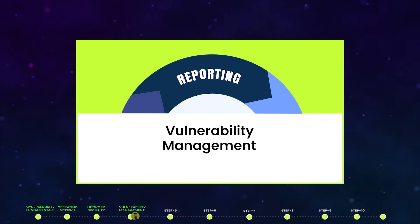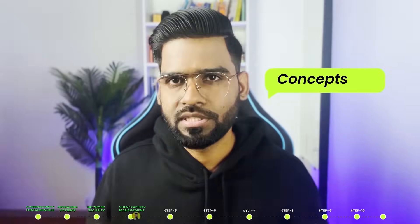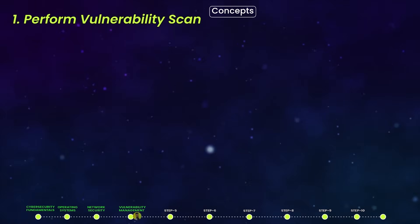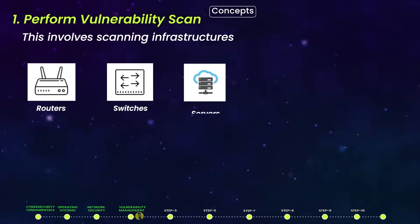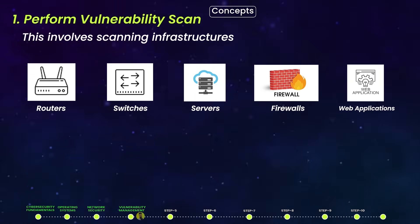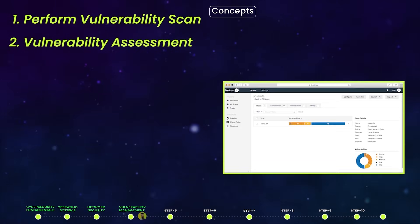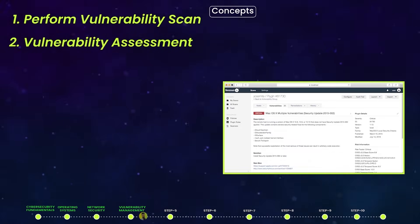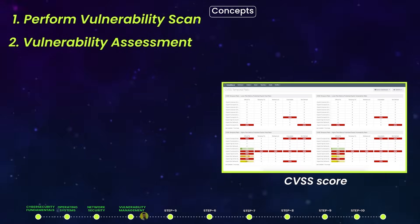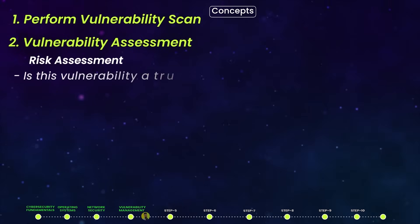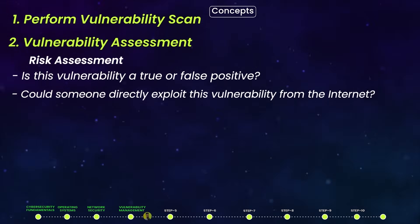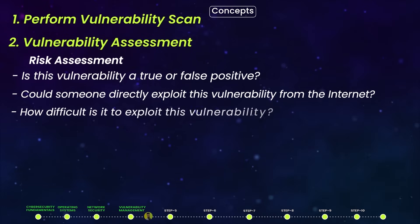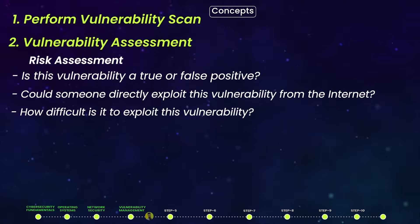Number four: Vulnerability Management — the process of identifying, evaluating, treating, and reporting security vulnerabilities. You need to perform vulnerability scanning across infrastructure including routers, servers, firewalls, and web applications. Vulnerability scanners provide a risk rating such as a CVSS score. You then perform a risk assessment by asking: Is this a false positive? Can someone directly exploit it from the internet? How difficult is it to exploit?